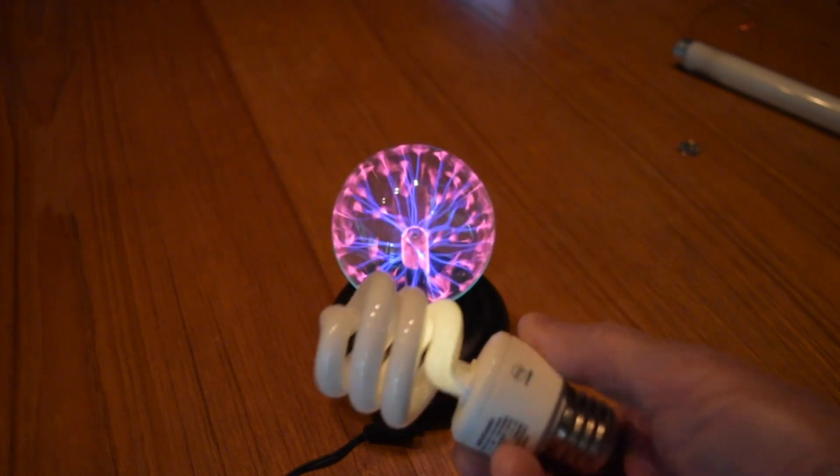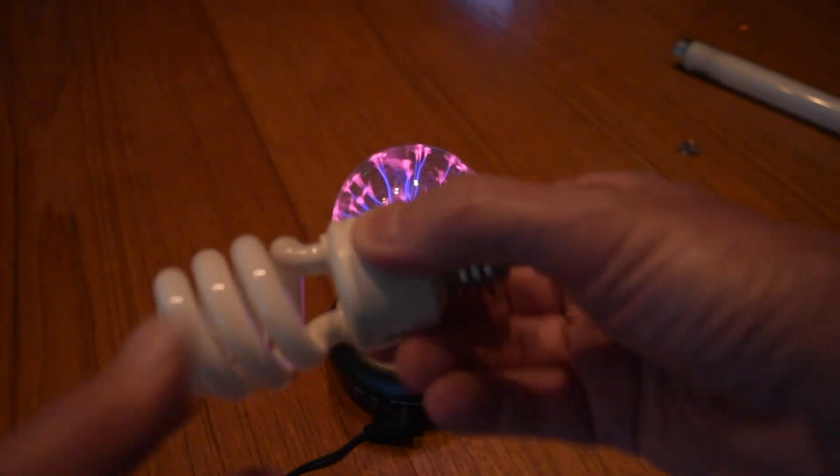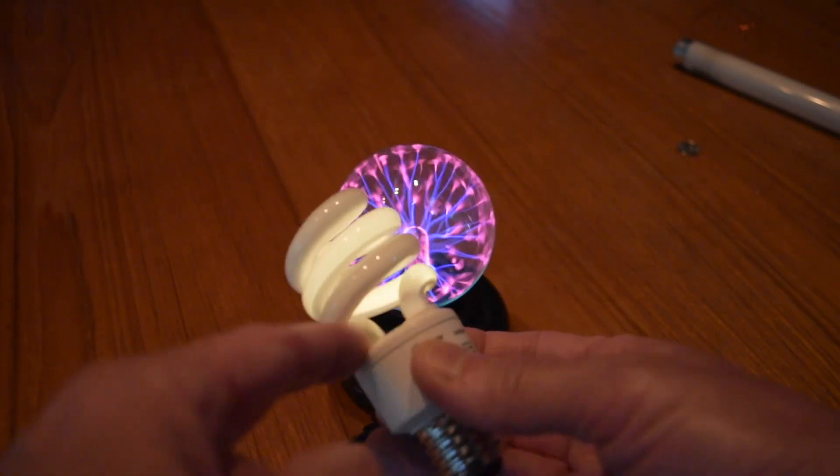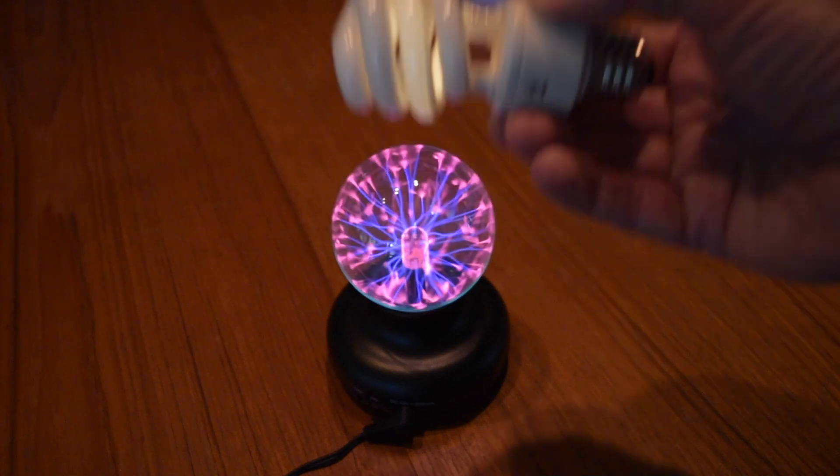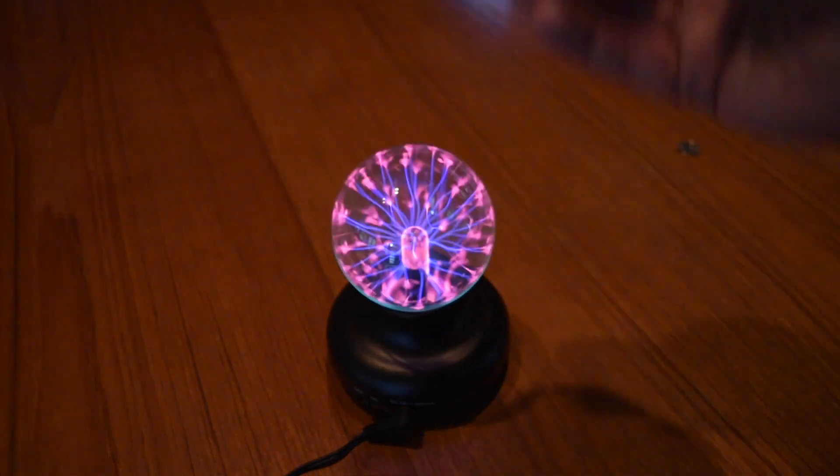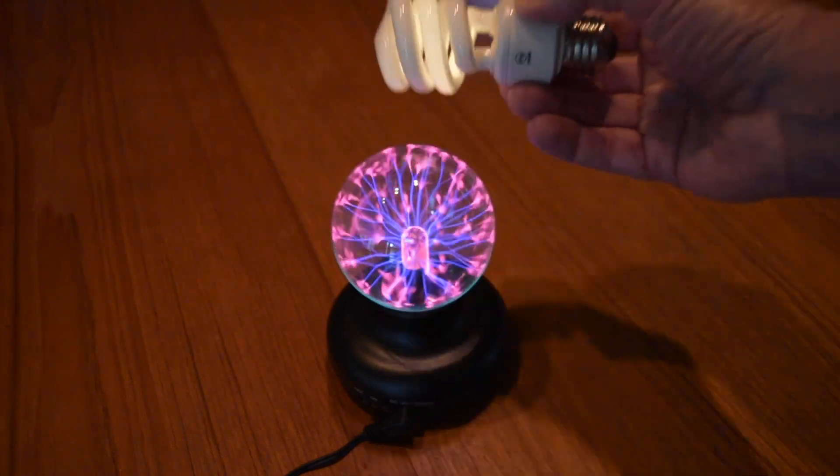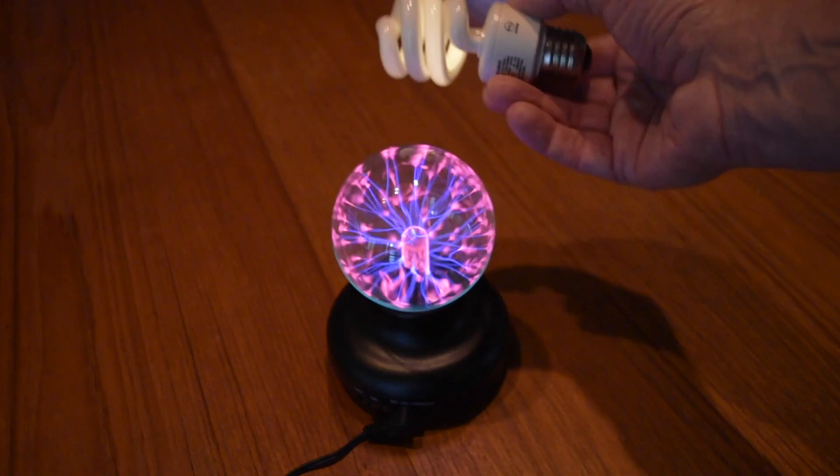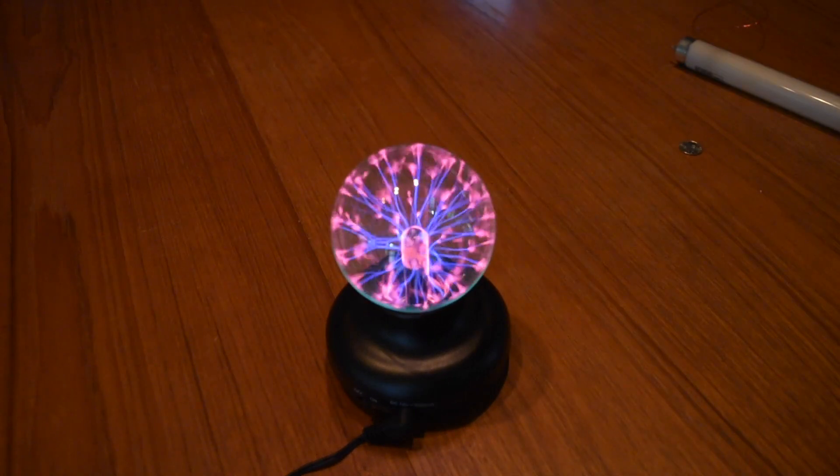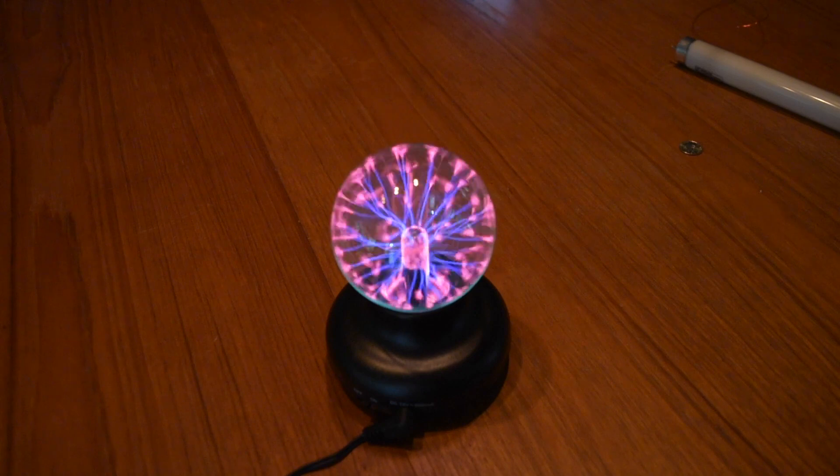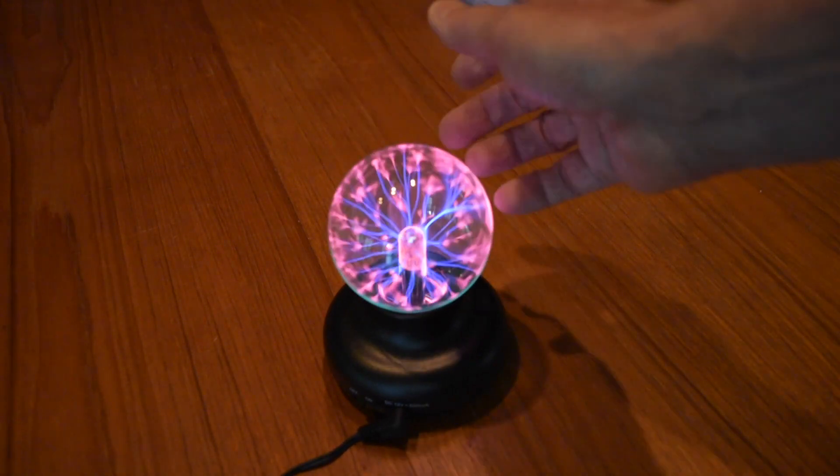When we put a fluorescent bulb or tube into a fixture, there's an AC voltage applied to the two ends of the tube which results in an AC electric field inside the tube. So the plasma globe is putting out an AC electric field that's going through our fluorescent tubes and causing them to light. The plasma globe is putting out an AC electric field that extends beyond what we see inside the globe.